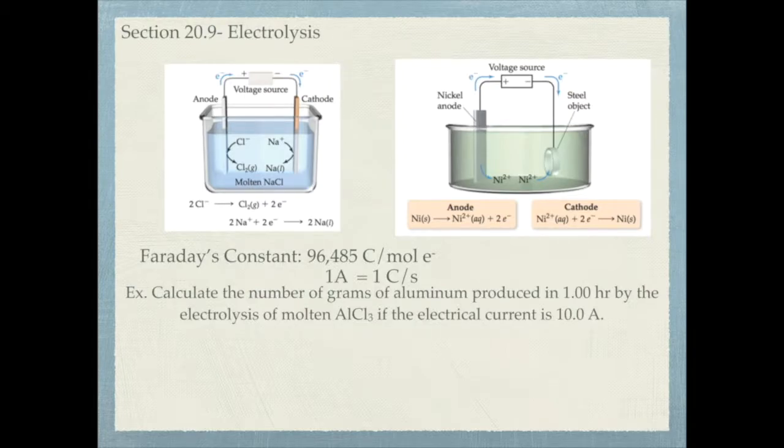It asks you to calculate the number of grams of aluminum produced in one hour by the electrolysis of molten aluminum chloride if the electrical current is 10 amps. The first thing I need to do is figure out the reaction that's occurring. If I start with molten aluminum chloride, that means I have aluminum ions. So I've got Al³⁺ and that's going to produce solid aluminum.